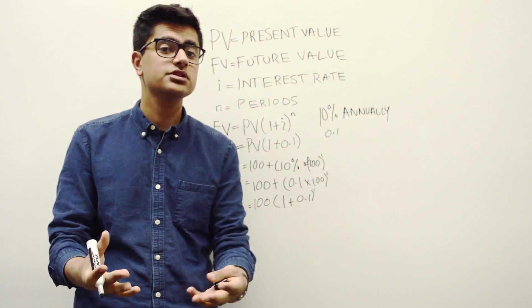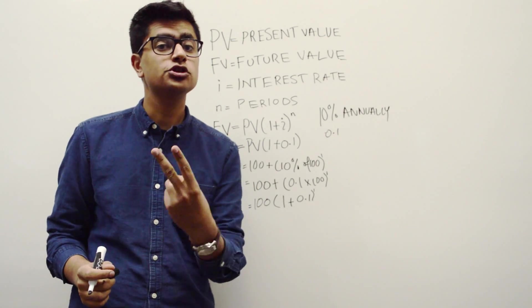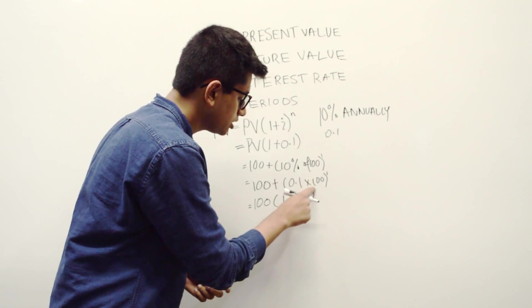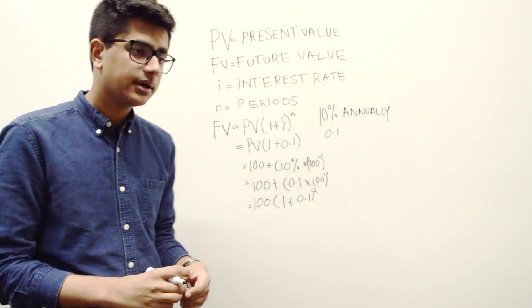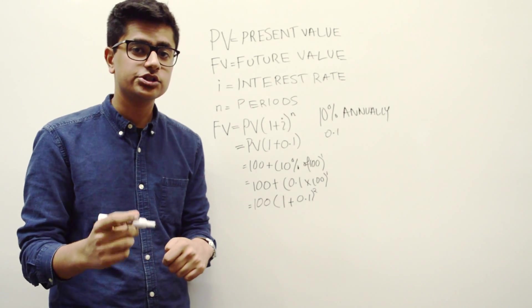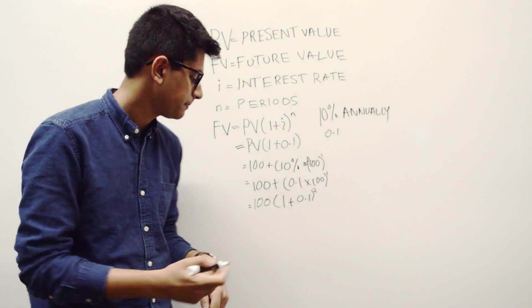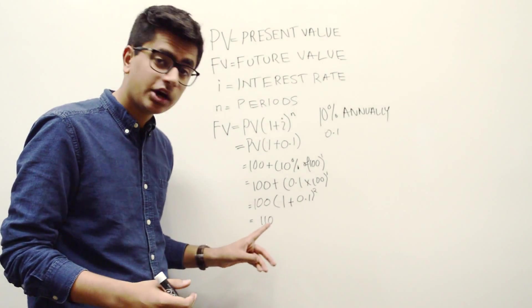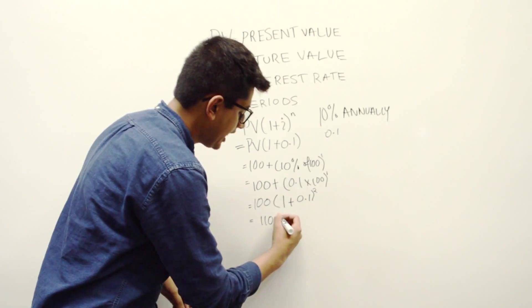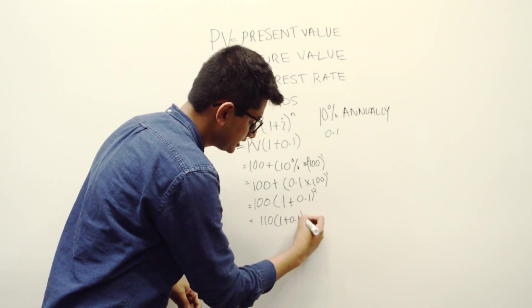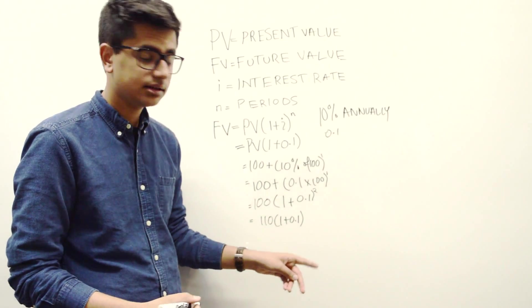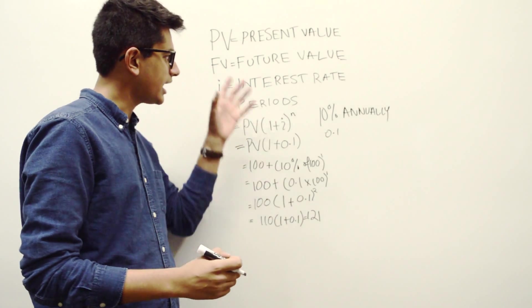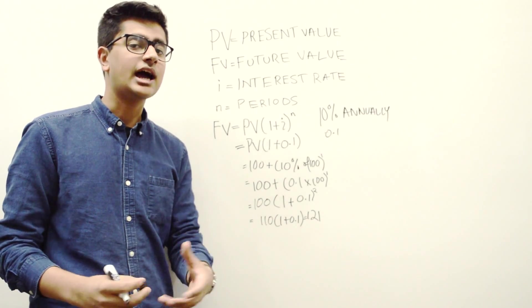Now consider a different scenario. Let's say you left your money in the bank for two years. Everything stayed the same, but you left your money for two years. Then this would turn to a two. Because at the end of first year, your money grew to $110. And then you have another year. So now you have $110 in your bank account, and it gets compounded again, multiplied by 0.1 again, and now you have $121. And that is how future value and present value work together for the time value of money.